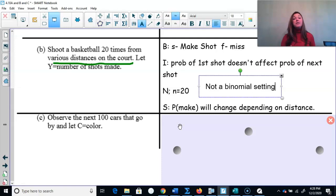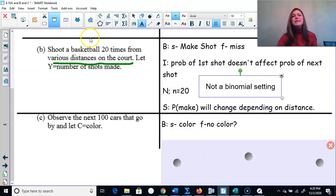Part C. Observe the next 100 cars that go by and let C equal the color. So we're going to record the color. One car goes by, we record that it's red. The next car goes by, we record that it's blue. The next car goes by, it's red again. What is our success? We're just looking at the color. Color? No color? No. That won't work. This is not a binomial setting.